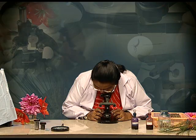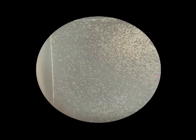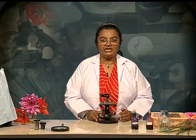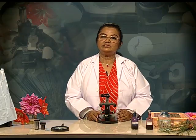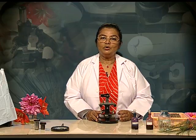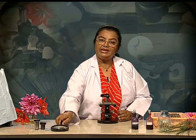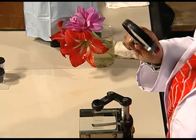Through the dissection microscope we can see the pollen grains appearing much bigger and they have a certain shape which is much different from the small specks of dust that we saw with the help of the hand lens.